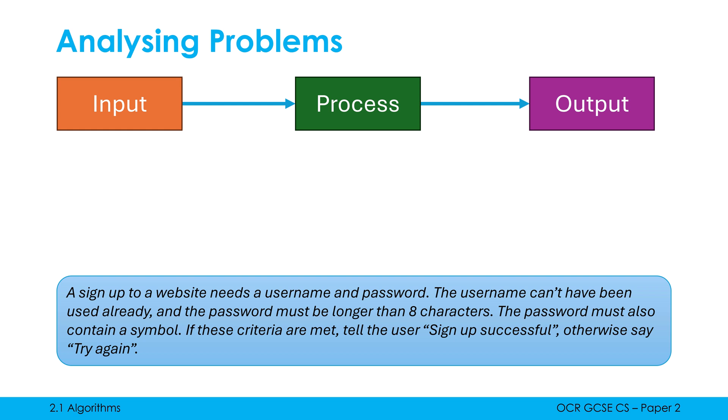Now hopefully you'll be able to code this, or at least come up with some sort of algorithm. But as part of that, you'd have to pick apart what are the inputs, what are the processes, and what are the outputs. So this time around, we've got two inputs really, we need both the username and the password, likely coming from the user.